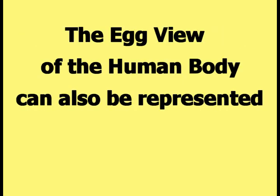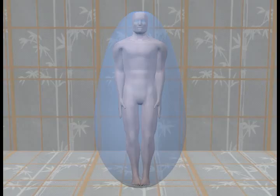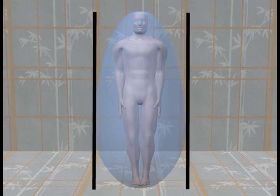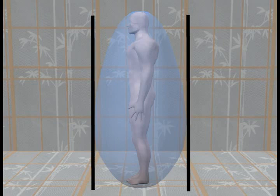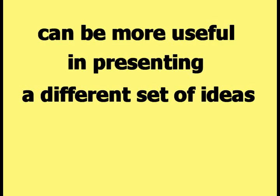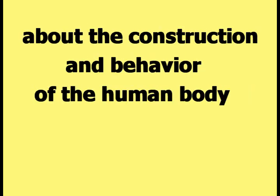The egg view of the human body can also be represented as shown in this picture. In this version, the egg has been enlarged to cover the body from the top of the head to the bottom of the feet, and is large enough to cover the body from side to side and from front to back. This configuration can be more useful in presenting a different set of ideas about the construction and behavior of the human body.